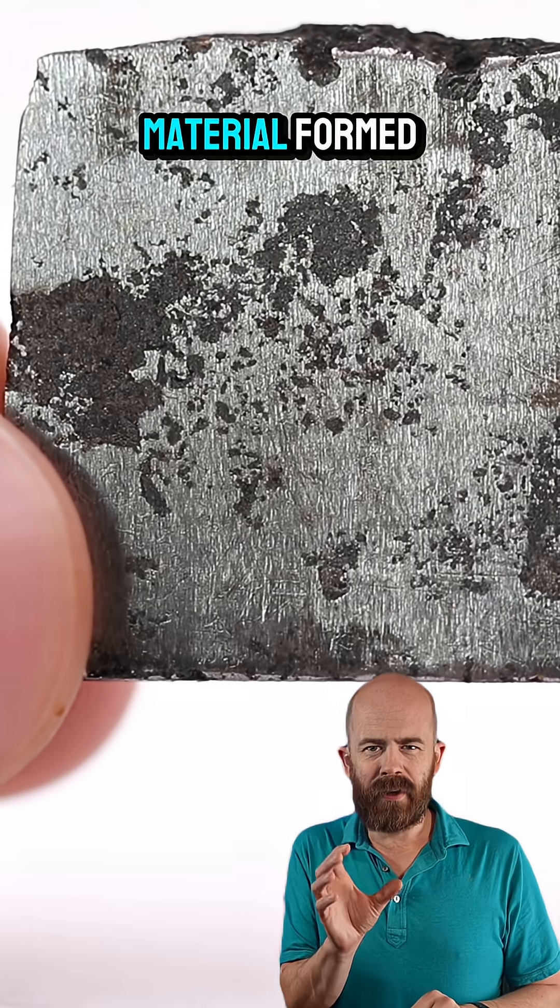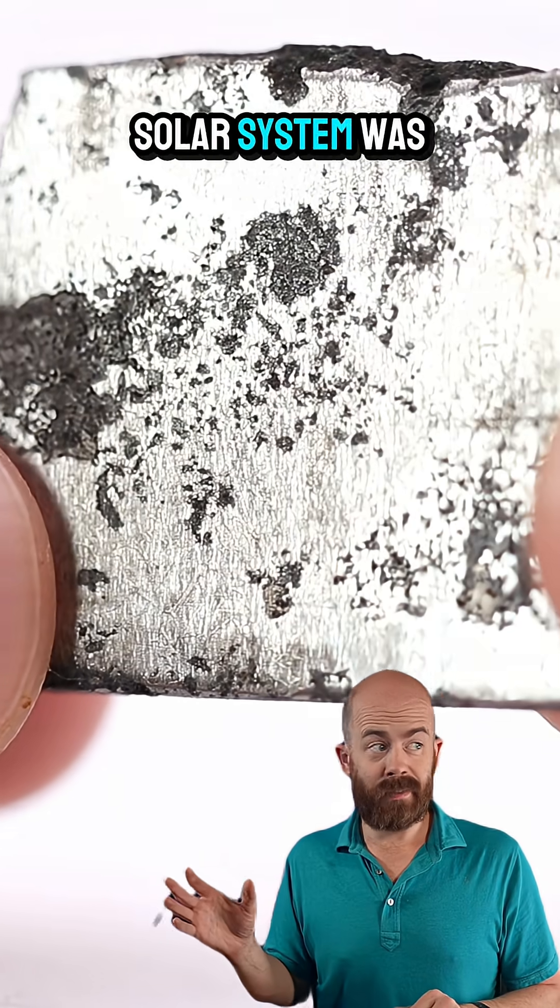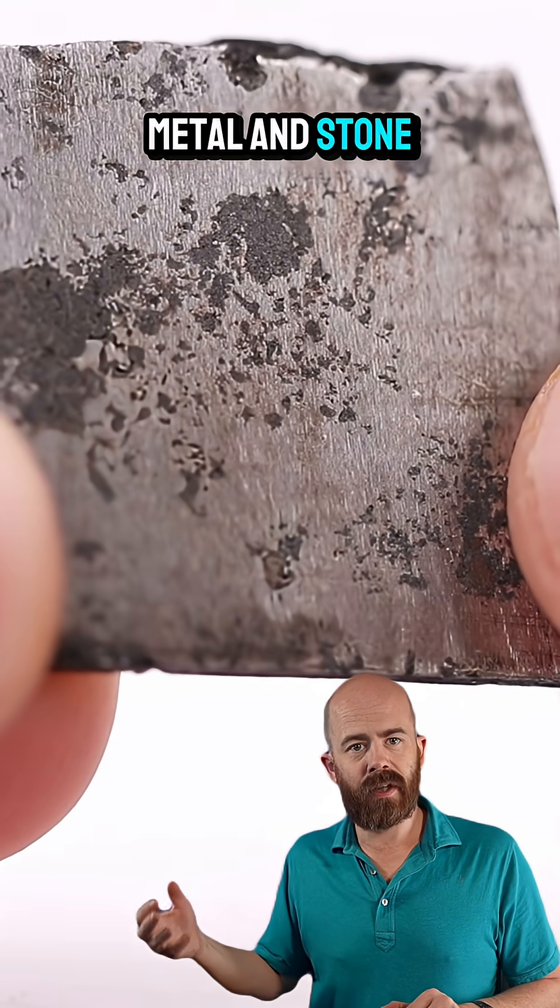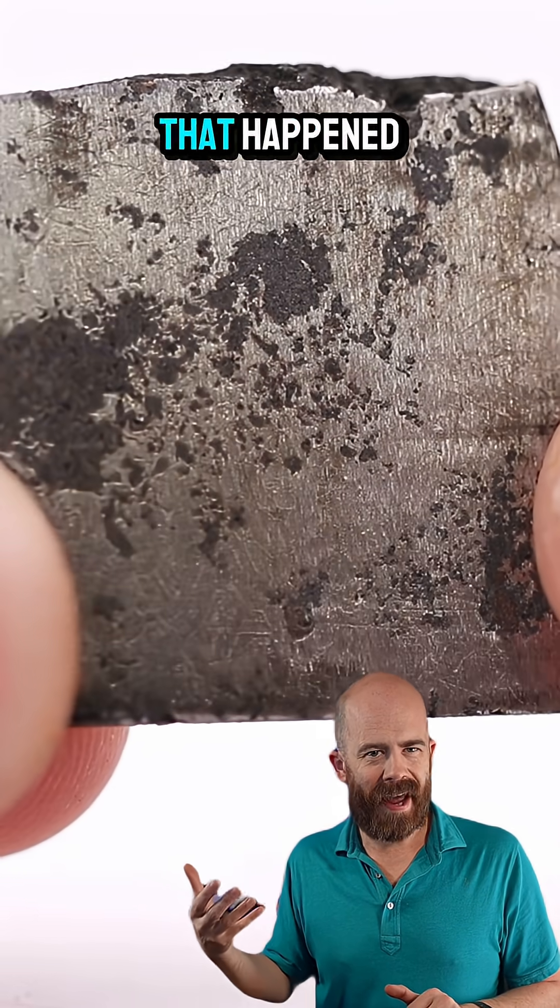Now dating shows that the material formed over 4.5 billion years ago, back when the solar system was still highly chaotic. Later impacts reheated and reshaped the metal and stone, but we don't quite know when that happened.